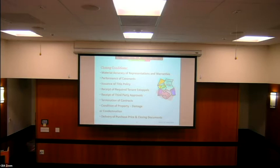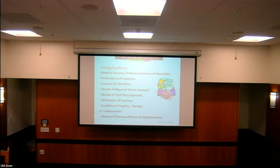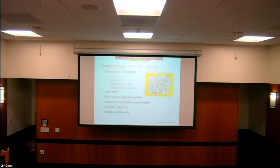Condition of property — this is rare, but if a casualty occurs prior to closing — a fire, tornado, earthquake — the risk of loss is on the seller. As a buyer you can walk away from the deal. Sometimes there are thresholds about what level of damage actually lets a buyer walk away, and that gets heavily negotiated. Delivery of purchase price and closing documents — the money needs to go in from the buyer, and the closing documents that convey the property need to be delivered.